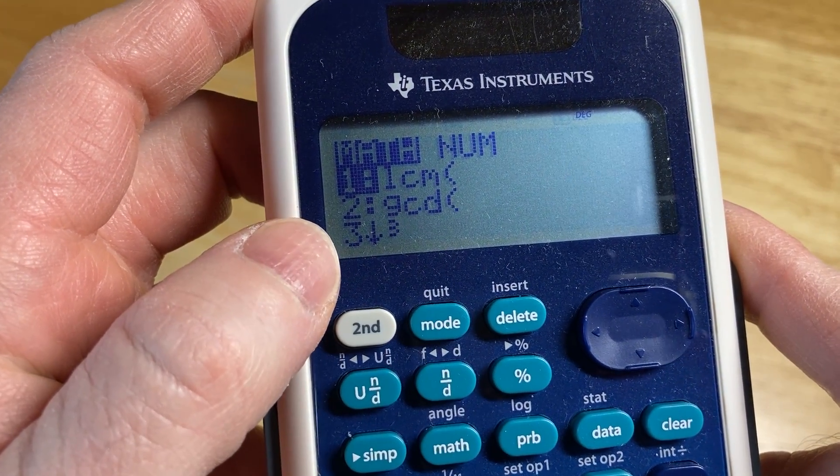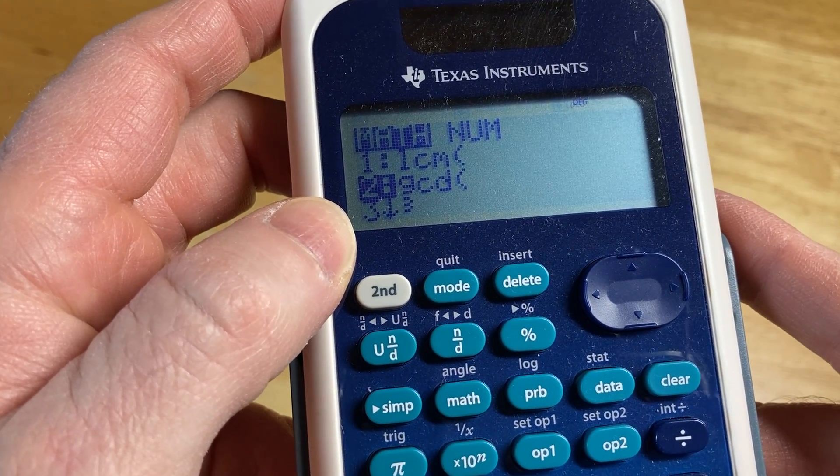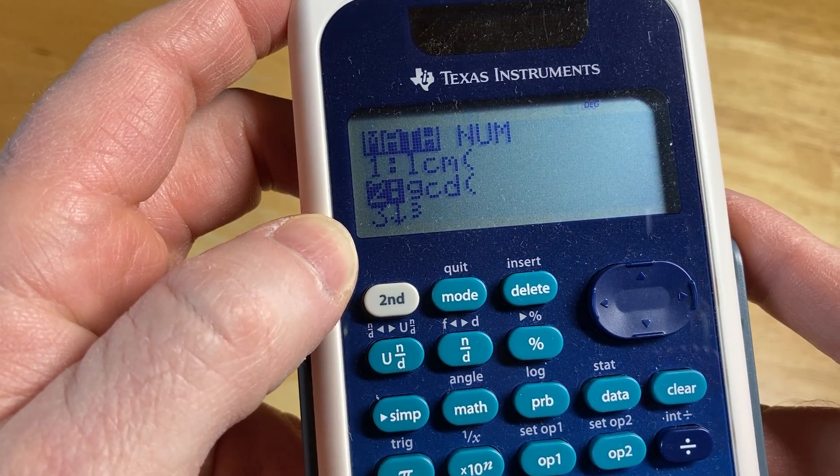And then there you see the GCD, so you can just scroll down and then press enter one time, and that's going to take us to the GCD.